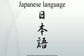Japanese is an agglutinative, mora-timed language with simple phonotactics, a pure vowel system, phonemic vowel and consonant length, and a lexically significant pitch accent. Word order is normally subject-object-verb with particles marking the grammatical function of words, and sentence structure as topic-comment. Sentence-final particles are used to add emotional or emphatic impact, or make questions. Nouns have no grammatical number or gender, and there are no articles.